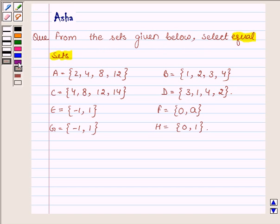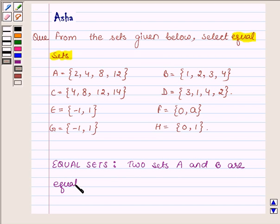So first let us learn what are equal sets. Two sets A and B are said to be equal if they have same elements.